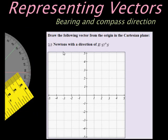In this example, we have to draw another vector, this time 2.9 Newtons, and the direction is given as compass direction. What you notice is that compass direction is east 57 degrees south.